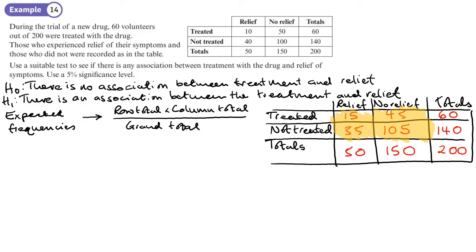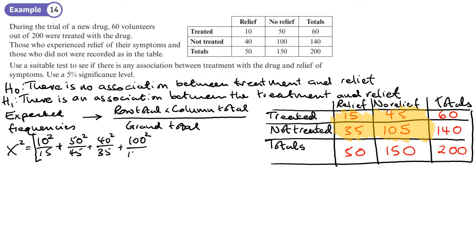Now I work out X-squared, taking each observed squared over its expected. Starting with 10 over the expected there, plus 50 observed over expected 45, plus 40 observed over expected 35, plus 100 observed over expected 105. Then I subtract the number of observations to give me X-squared, and that gives a value of 3.1746.